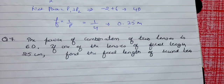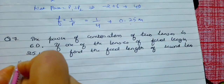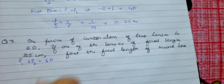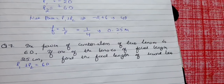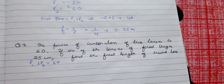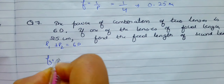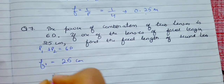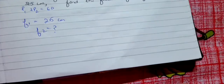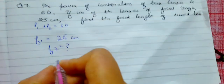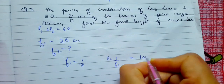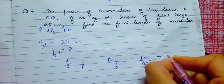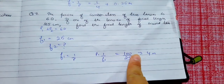Next question: the power of combination of two lenses is 6 diopter. P1 + P2 = 6D. If one of the lenses has focal length 25 cm, find the focal length of the second lens. F1 = 25 cm. P1 = 1/F1; converting cm to m by dividing by 100, P1 = 100/25 = 4 diopter. Since P1 + P2 = 6, P2 = 6 - 4 = 2 diopter.